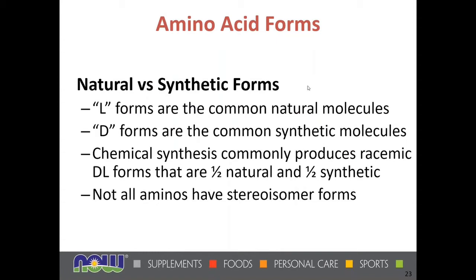Regarding supplement basics, the L forms — L meaning levo, Latin for left-handed — are the common natural molecules found in nature and in supplements. The D forms are common synthetic molecules, with D standing for dextro, meaning right-handed. Chemical synthesis commonly produces DL or racemic forms that are half natural and half synthetic. Not all amino acids have a right-handed or left-handed stereoisomer form, which we'll cover in a moment.